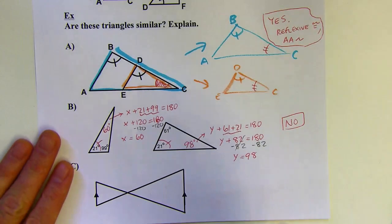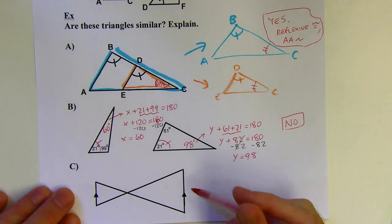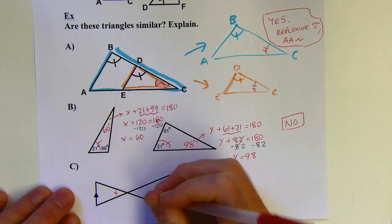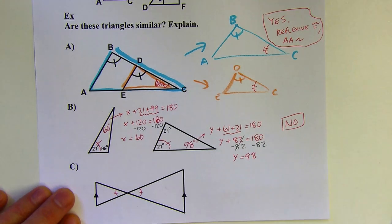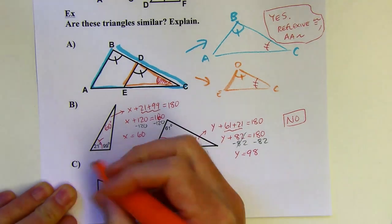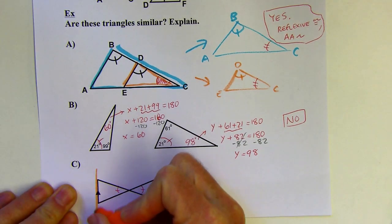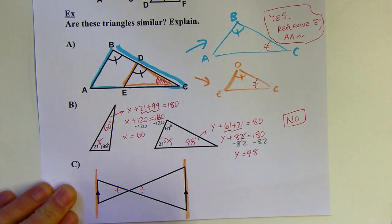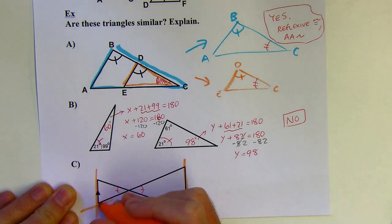My third example here, I've got one of these bow-tied types of problems. I'm looking for two pairs of congruent angles and I can use the vertical angles theorem to say that those two are congruent. Also I've got these parallel lines. If I'm thinking about these as my tracks, when my tracks are parallel then I can use the transversal to create some angle pairs.